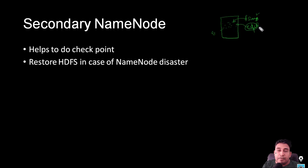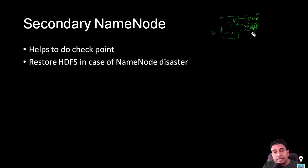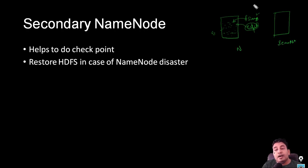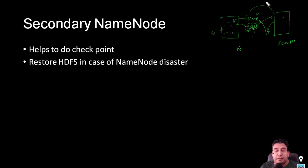The main problem is the edit file keeps growing while the fs image stays as-is. This huge edit file is a problem because when we restart the name node service, it takes a lot of time. To avoid that, the system periodically takes the latest in-memory metadata into a new fs image and starts writing to a new edit file. This is done with the help of secondary name node — it receives the fs image and edit file, merges them, sends back the latest fs image, and the name node starts writing to a new edit file. I explained this checkpoint process in detail in a previous video.